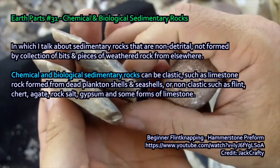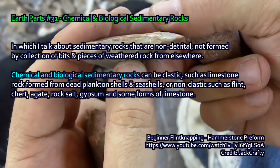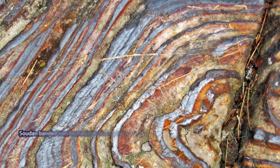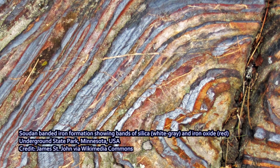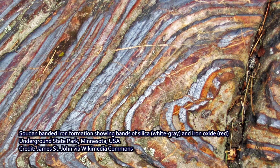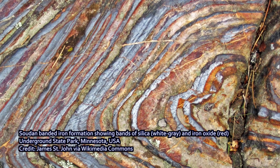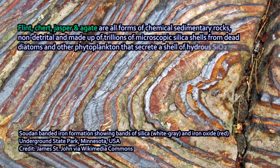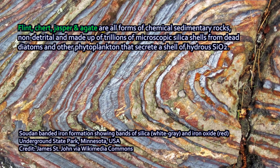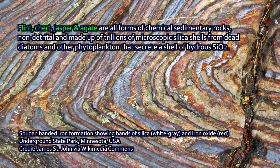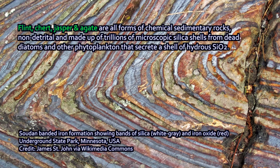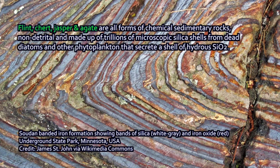Flint is an example. If it's light-colored, we tend to call it chert. If it's darker, it tends to be called flint. If it's red, people call it jasper. And if it's banded, people call it agate, a semi-precious stone. But it's silica — SiO2 — deposited as a product of biology in this case.